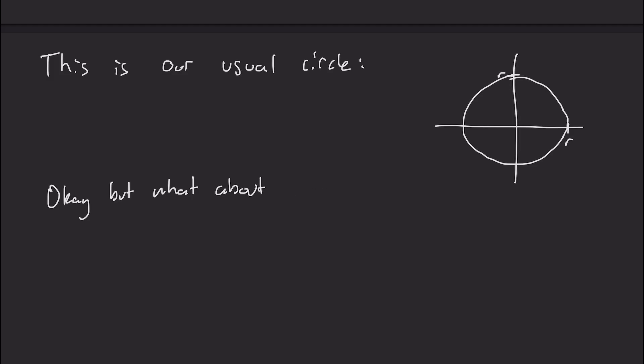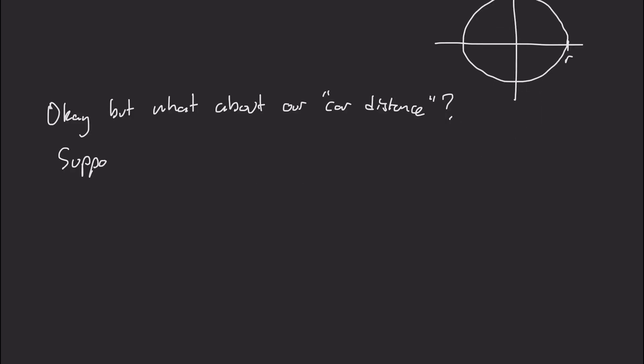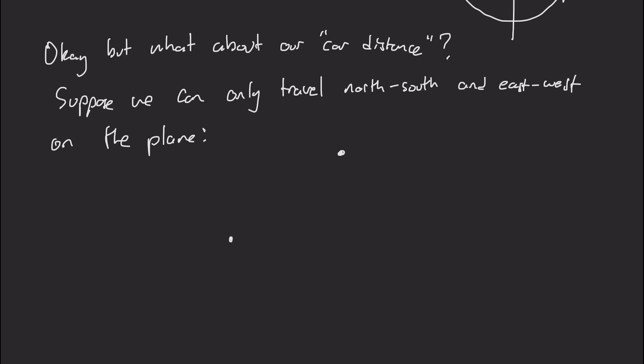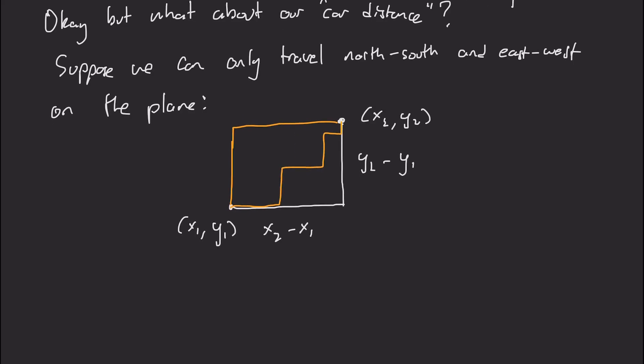Okay, but what about our car distance? So let's suppose that we can only travel north, south, and east-west on the plane. So we can't go diagonally. So then between two points, x1, y1, and x2, y2, we can only travel in these straight orthogonal lines. One such way would be going straight east in this case, and then straight north. We travel x2 minus x1 east, and y2 minus y1 north. And actually, you can see that no matter which other shortest path we take with this condition, we get the exact same distance.